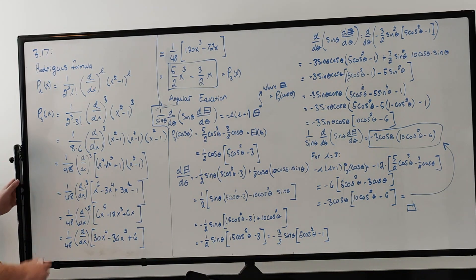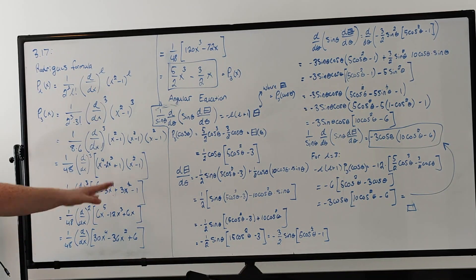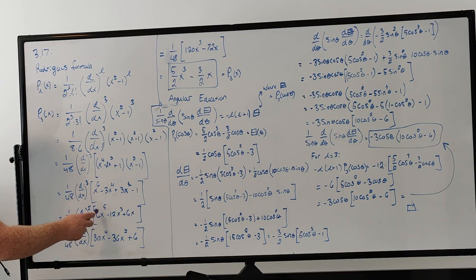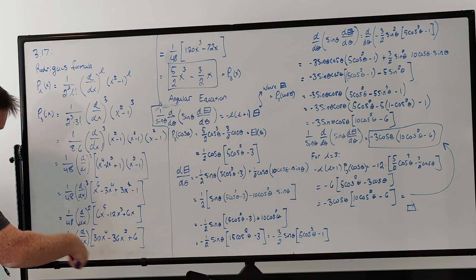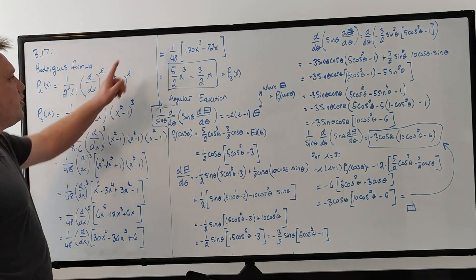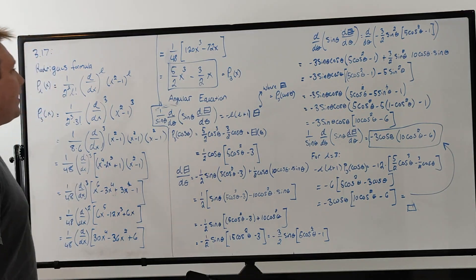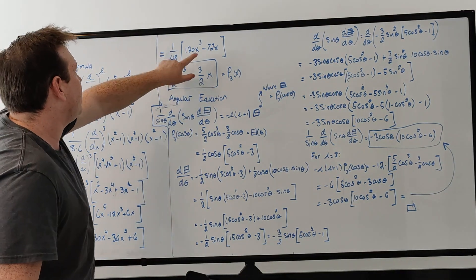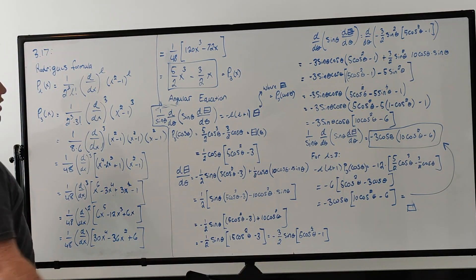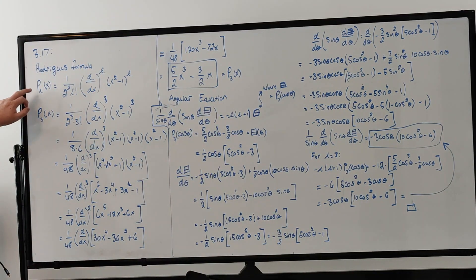Now we take three derivatives of this polynomial. The first derivative gives 6x to the fifth minus 12x cubed plus 6x. The second derivative gives 30x to the fourth minus 36x squared plus 6. The third derivative gives 1 over 48 times 120x cubed minus 72x. Dividing through, we get 5 halves x cubed minus 3 halves x, which is the third Legendre polynomial.